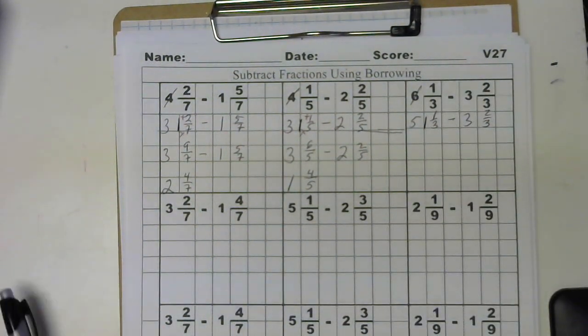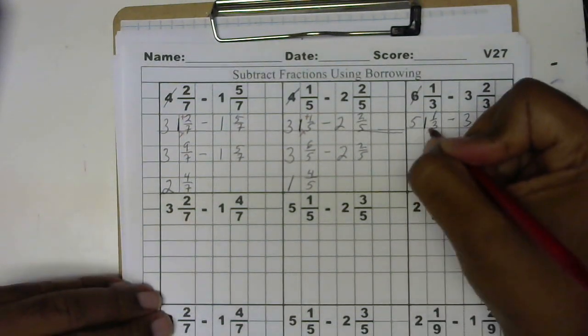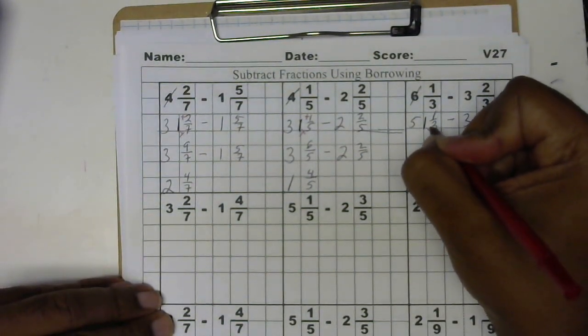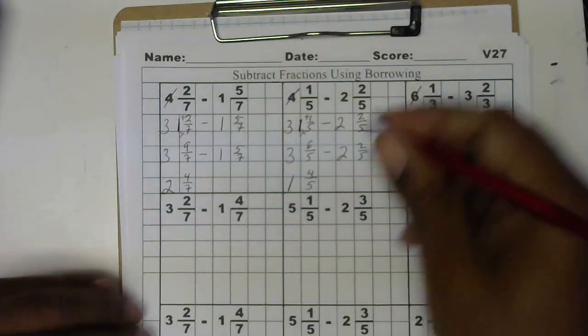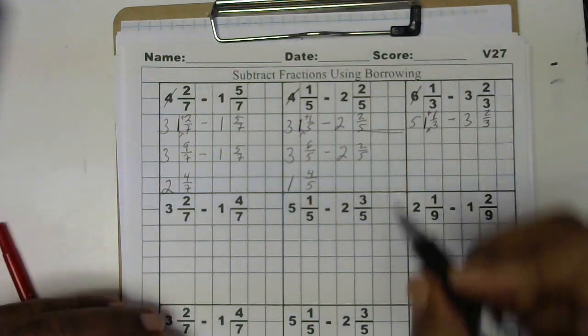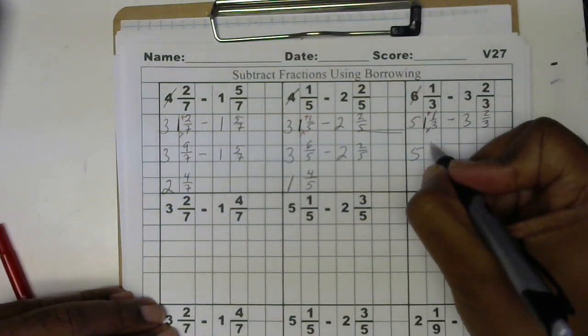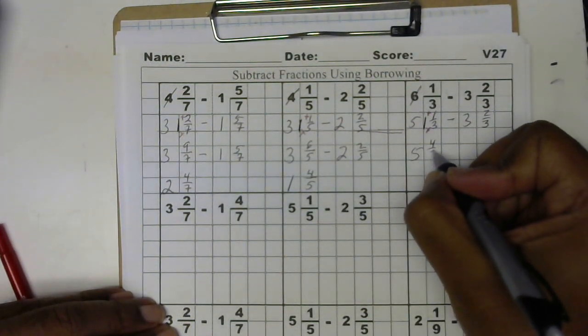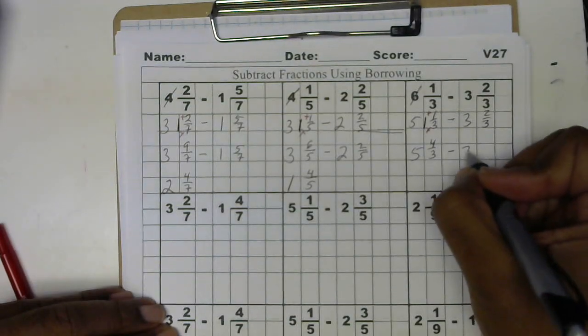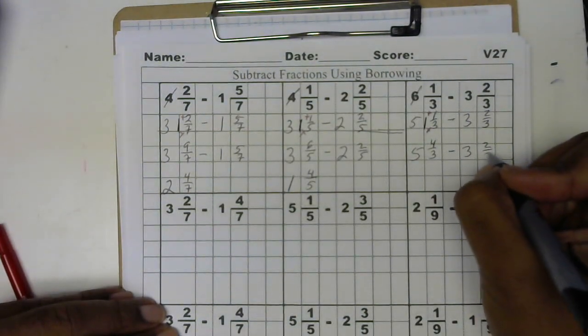So now I'm going to turn this 1 and 1 third into an improper fraction by using multiplication and adding. The 5 comes down. 3 times 1 is 3 plus 1 more is 4. So this is 4 thirds minus 3 and 2 thirds.